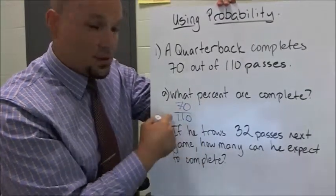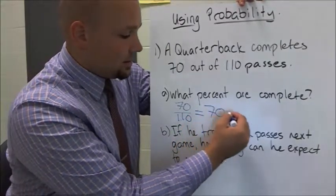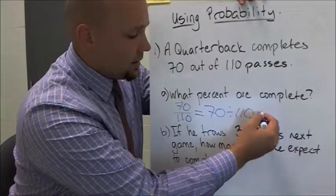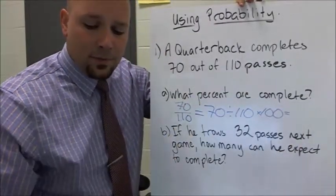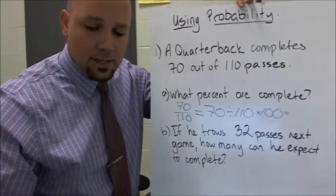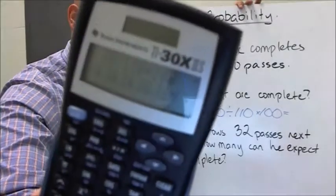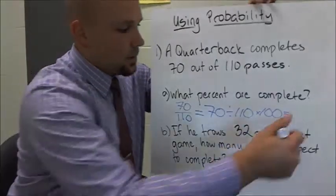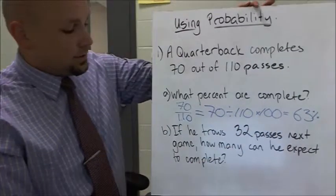We can turn that into a percentage just by doing 70 divided by 110 and then times 100 on my calculator. So 70 divided by 110 times 100. And that's our answer, 63 percent. So 63 percent are completions.